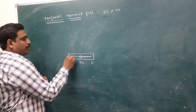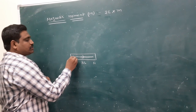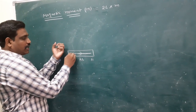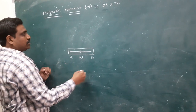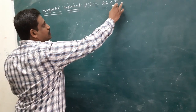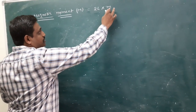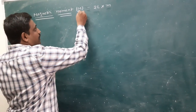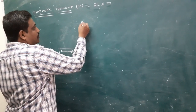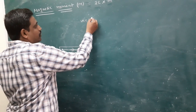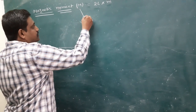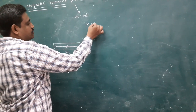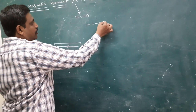The capacity of a pole to attract other materials is called pole strength. Magnetic moment is a vector. Its direction is always from magnetic south to magnetic north.